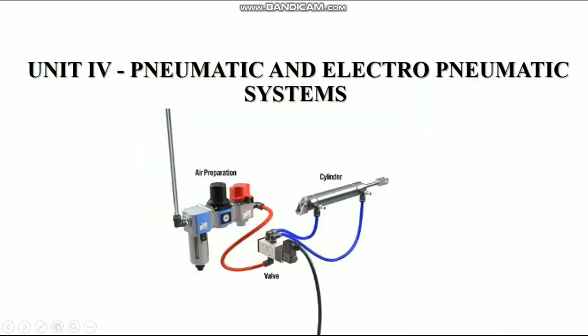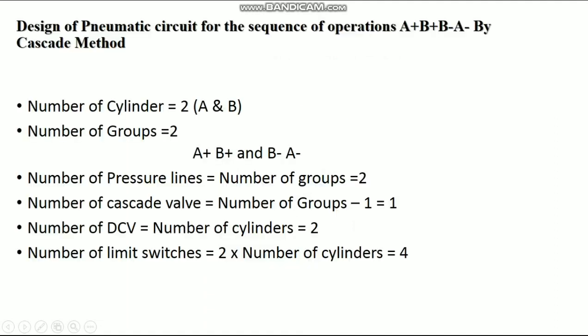As per the syllabus, the 4th Unit title is Pneumatic and Electro-Pneumatic Systems. Let us consider a problem: design of a pneumatic circuit for the sequence of operations A+, B+, B-, A- by the Cascade method.